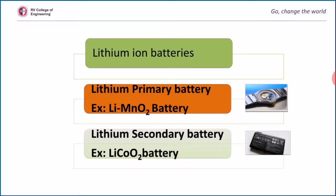Lithium is an alkali metal which possesses low electrical potential, good conductivity and light weight. For these reasons, lithium is used in most batteries, both primary and secondary. There are different types of lithium ion batteries depending on the choice of electrolyte and positive electrode. These lithium batteries are classified as primary (not chargeable) and secondary (chargeable). Examples: lithium MnO2 battery (primary) and lithium cobalt oxide battery (secondary).